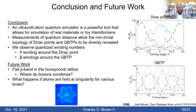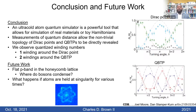In conclusion, an ultra-cold atom quantum simulator is a powerful tool for simulating real materials and toy Hamiltonians. Crucially, measurements of quantum distance allow the non-trivial topology of both Dirac points and quadratic band touching points to be directly revealed. We observed quantized winding numbers of 1 associated with the Dirac point, and using this new technique — which could not have been done before — a winding number of 2 around the quadratic band touching point.